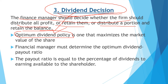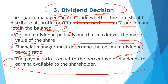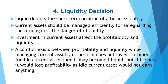The dividend decision is closely related to the value of the organization and the wealth maximization of shareholders. The finance manager determines an optimum dividend payout ratio where the best benefit to wealth maximization is achieved. They decide how much to pay out and how much to retain, expressed mathematically as the percentage of dividends relative to available shareholders' funds.